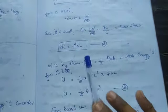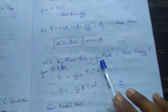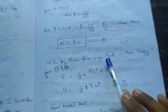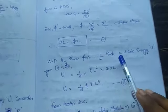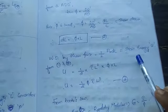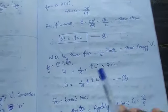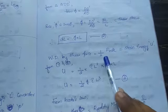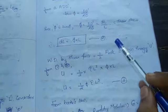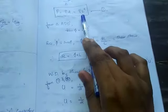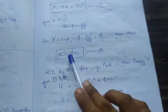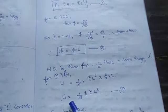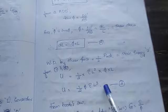Now work done is force into distance. We already found it as 1 by 2 P into DL for gradually applied load, which is the strain energy. So 1 by 2 into P is tau L square into DL is phi into L. So U equals 1 by 2 phi tau L cube.